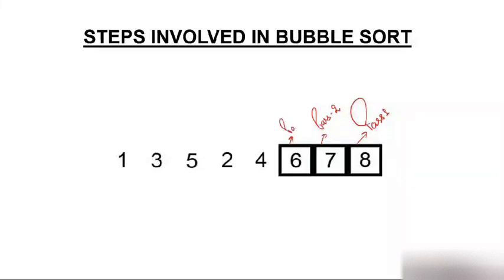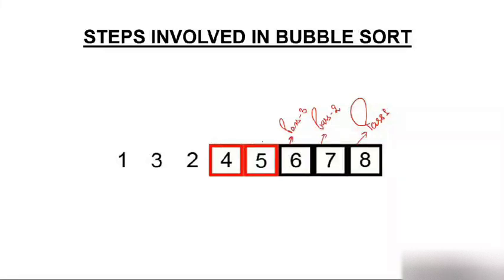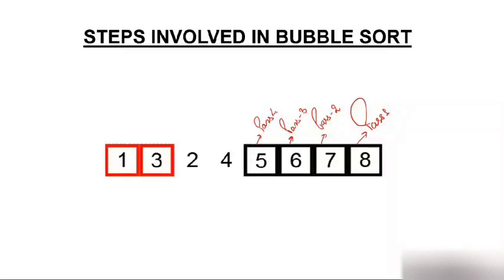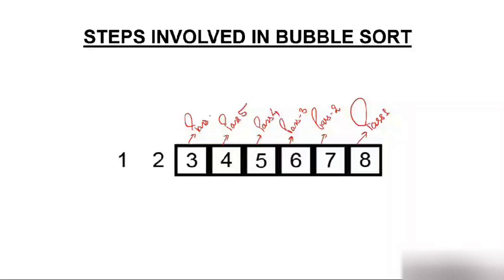In pass four: 5 with 2, swapped; 5 with 4, swapped — 5 takes its position. Pass five: 3 with 2, swapped; 3 with 4, no change. Pass six: 1 with 2, no change — 3 is in its position. Pass seven: 1 with 2, already sorted. So there are seven passes for eight elements, and the array is now fully sorted.